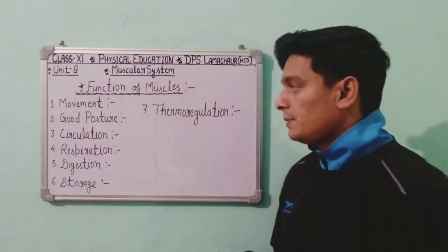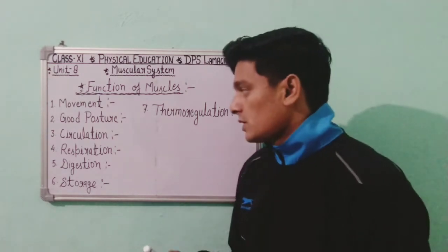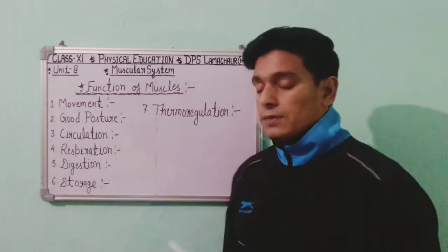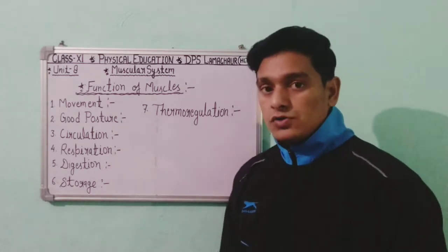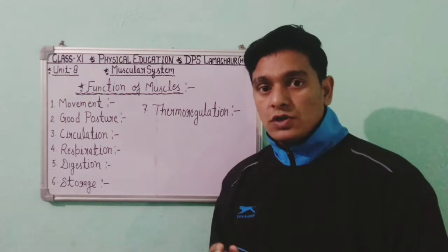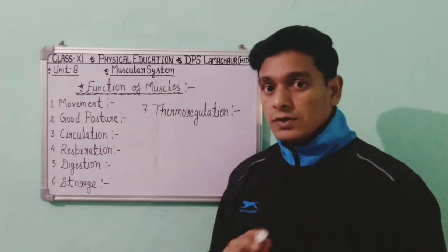The third function is circulation. The cardiac muscles and smooth muscles are primarily responsible for transporting and circulating blood and nutrients from one part of the body to another. Our muscles also work to support the circulation of blood and food.